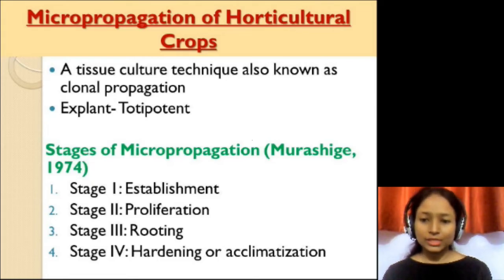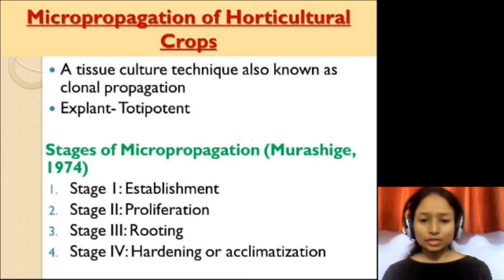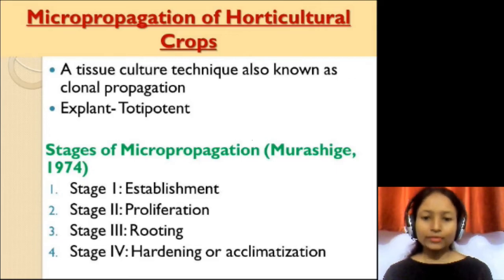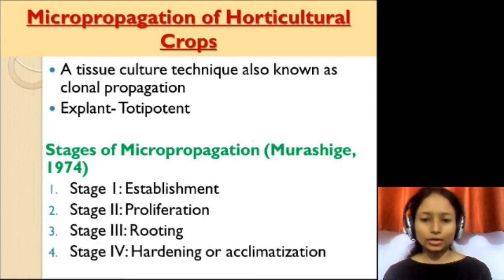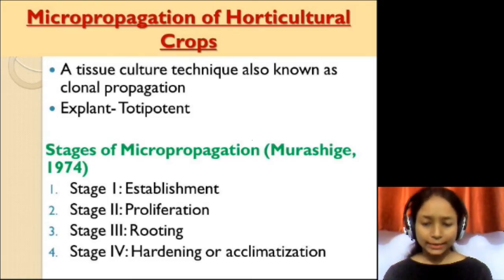The first stage is the establishment stage. In this stage, suitable explants will be taken — the explant should be disease free and should have meristematic tissues, meaning actively dividing tissue or cells. After selection of suitable explant, they are first surface sterilized by washing and also with the help of chemical sterilants. After surface sterilization, these explants are shifted to culture media, which will contain all the macronutrients as well as micronutrients to provide nutrition to the explant for its growth.